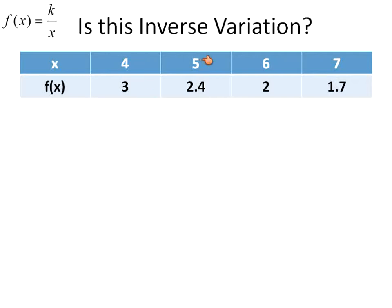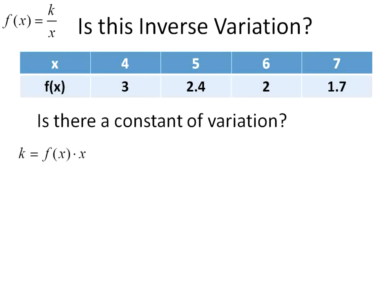Now what I need to do is check for each column and make sure that it matches up with our constant. Let's go ahead and look for that constant of variation, the variable k. We're going to use this equation, which is just this one rearranged. We're just multiplying both sides times x. So our constant equals our f(x) times x. So 3 times 4, which is 12. Perfect. Next one. My function of x equals 2.4. My x value is 5. 2.4 times 5 gives me 12. Very nice.